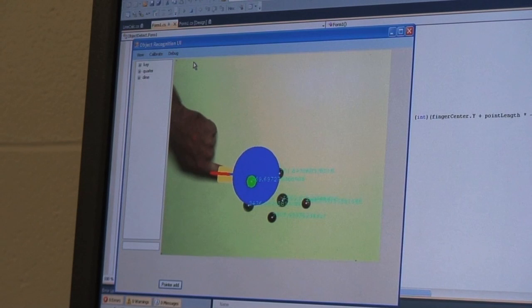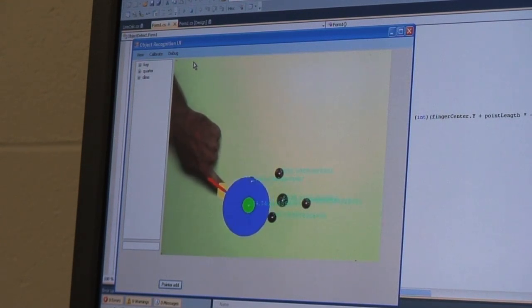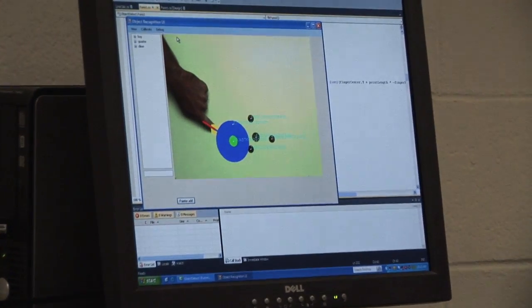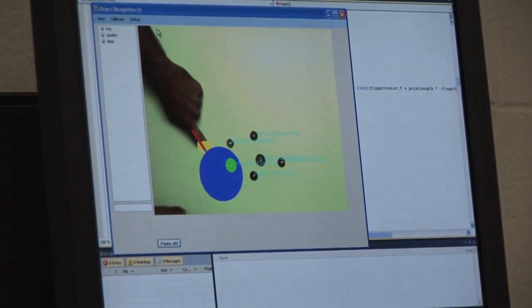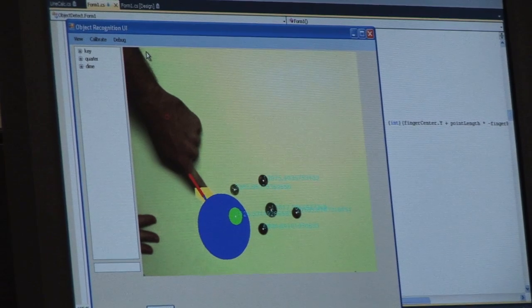And then it figures out which object you're pointing at based on that line that comes out of the hand and a line connecting to the object.